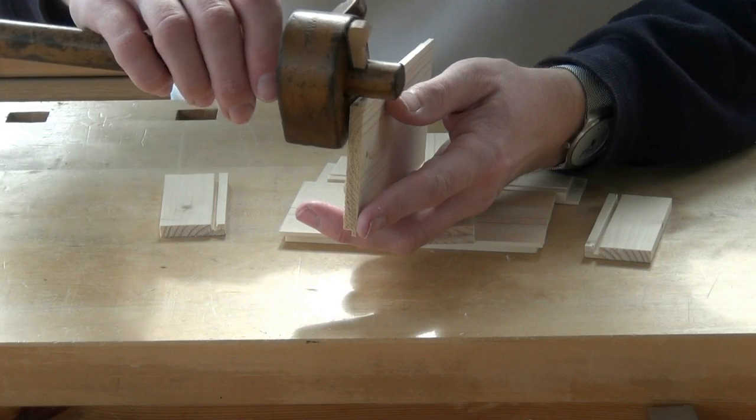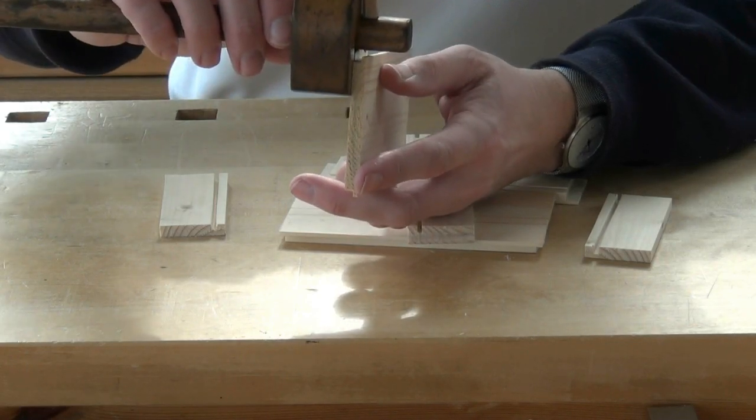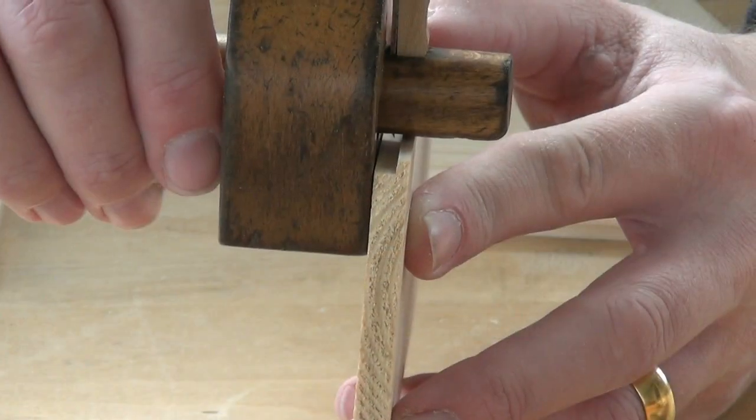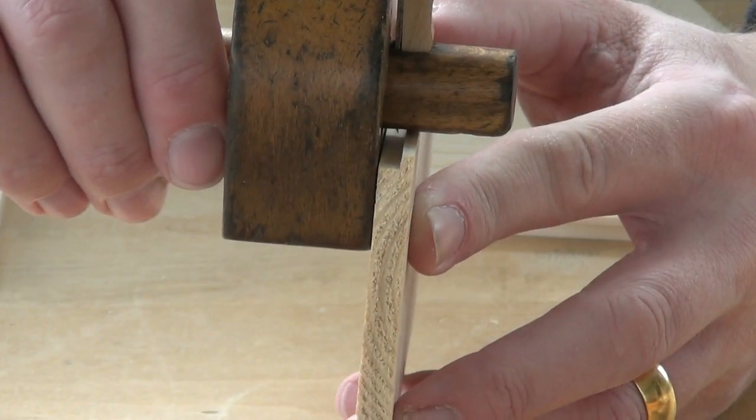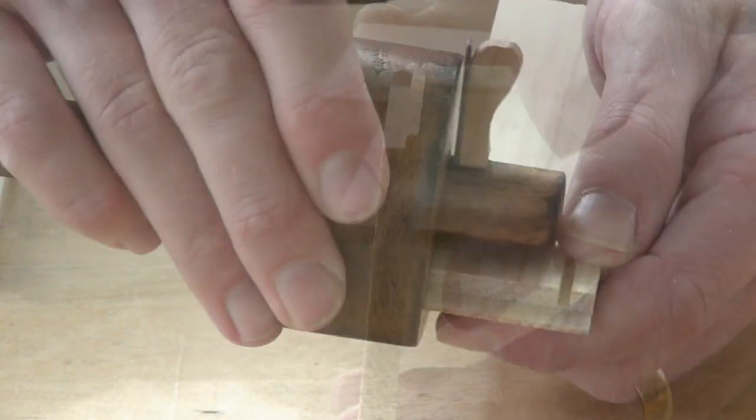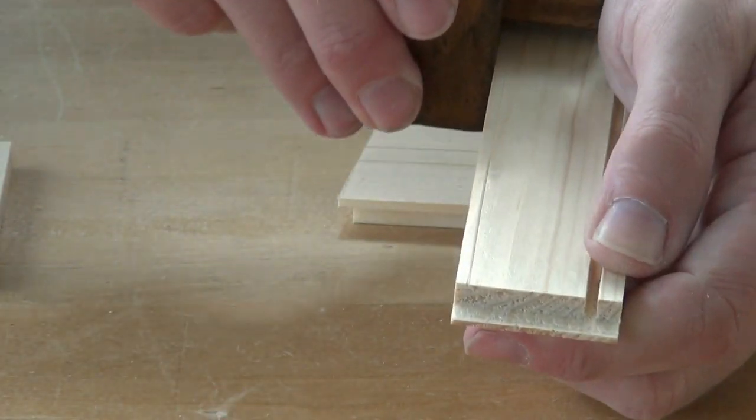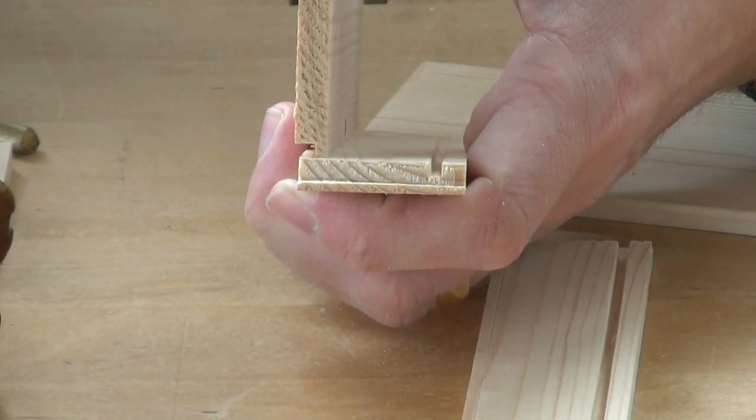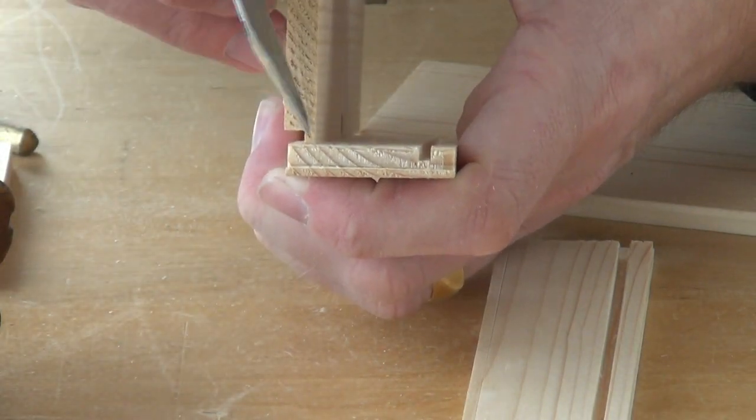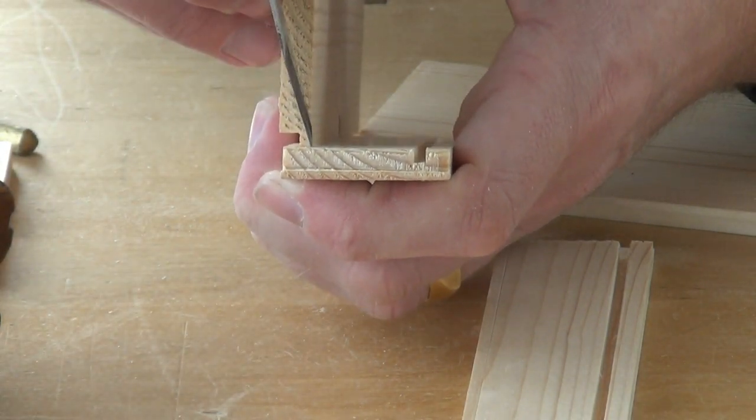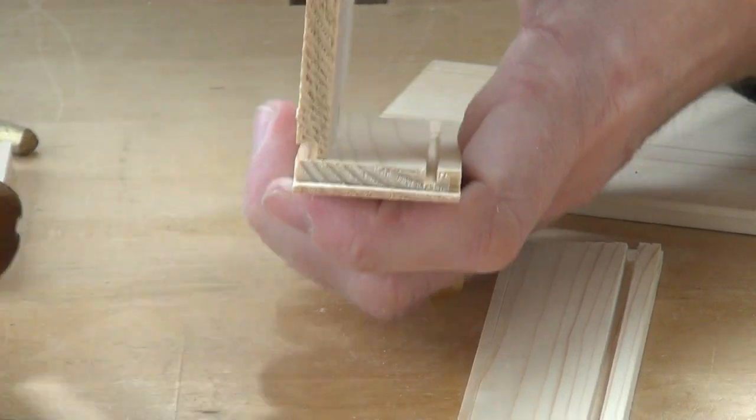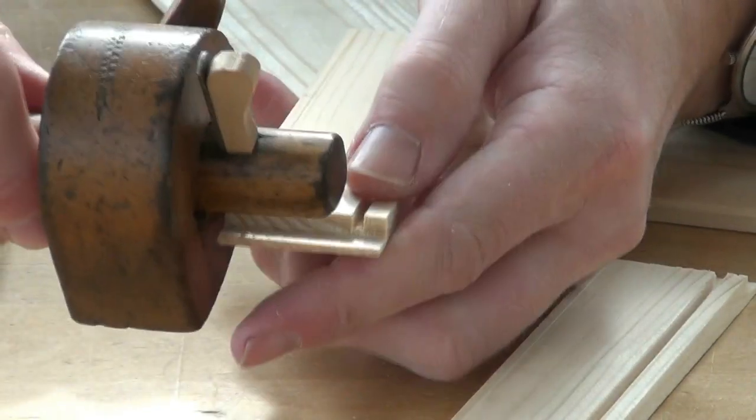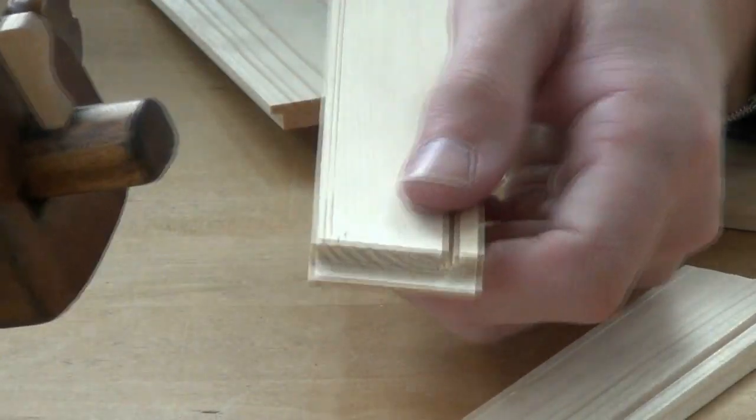I'll take my marking gauge and I'm going to set it a little bit less than the depth of the rebate. That will mark the top of the groove in the sides. Now I need to make the groove the right width to take the little tongue that's been left on the sides of the top. So I'll mark that with the knife to begin with. Use that to set my gauge. I'll mark that on the sides.